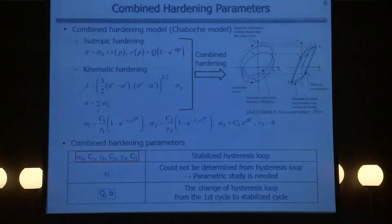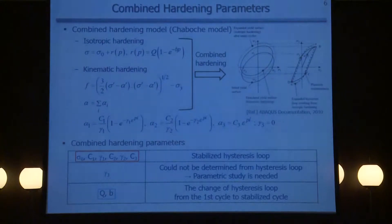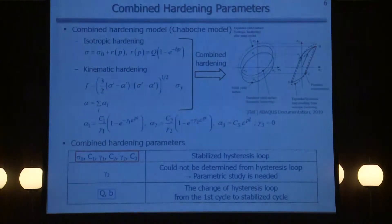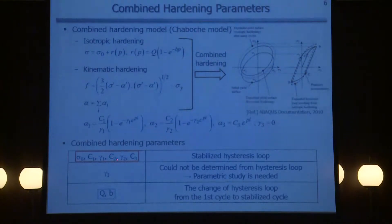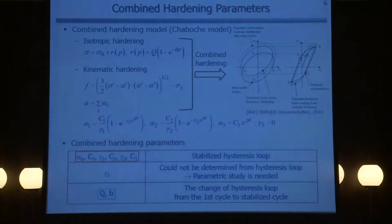This slide explains the combined hardening parameters. We use the so-called Chaboche combined hardening model, which consists of isotropic hardening and kinematic hardening. Isotropic hardening is expressed by the R(p) function. Kinematic hardening is expressed by three back stresses: alpha 1, alpha 2, and alpha 3. Gamma 3 accounts for the ratcheting phenomenon. In this model, we must determine nine parameters — C1, gamma 1, C2, gamma 2, C3 for kinematic hardening — and gamma 3 cannot be determined from the hysteresis loop since it is related to ratcheting. Q and B are related to isotropic hardening.